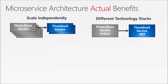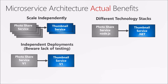The second reason to use microservices is different technology stacks. You might want to write one part of your program using Node.js — for example, the photo-share service — and then use .NET to do the thumbnailing service. You communicate between these two microservices using some kind of network communication.